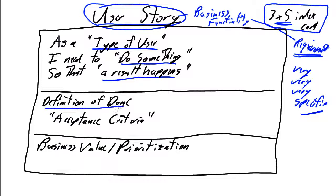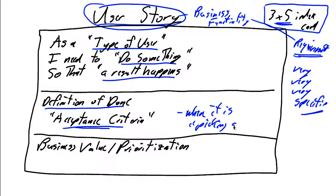The next part of a user story is the definition of done. We will determine this user story — where a warehouse clerk can find a product in the inventory so that it can be shipped to a customer — is complete when the acceptance criteria is met: we know where it is, i.e., a picking slip is produced. And finally, we identify the business priority. This is a high business priority with a priority of eight. We use these prioritizations to pick the next most valuable set of user stories from the backlog to put into the sprint.